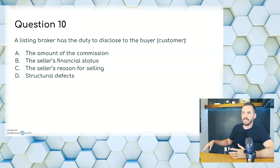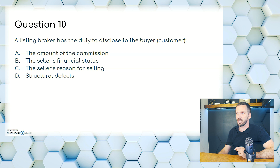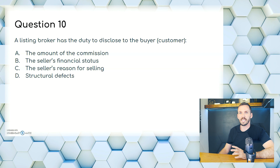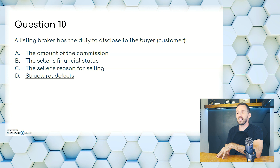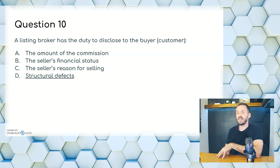Question 10. A listing broker has the duty to disclose to the buyer or customer: A, the amount of the commission; B, the seller's financial status; C, the seller's reason for selling; or D, structural defects. Structural defects are a material fact — the others are not, so you don't need to disclose them. Agents only need to disclose defects they know about. An agent is not an inspector. The answer is D.